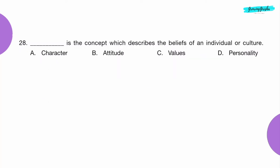Question 28: Dash is the concept which describes the beliefs of an individual or culture. Option C: Values.